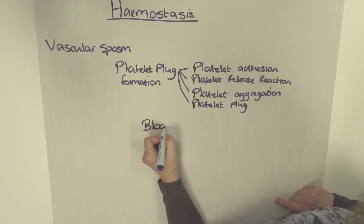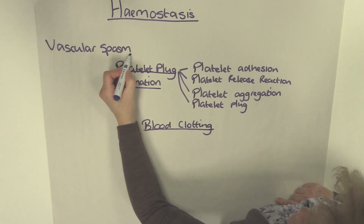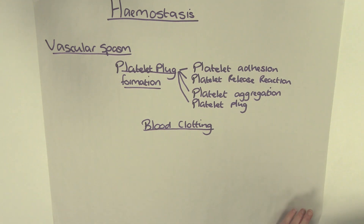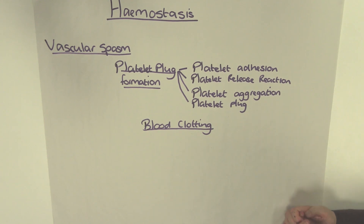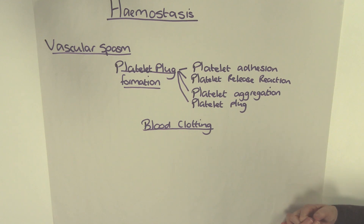Those are all the stages in platelet plug formation. The next stage in haemostasis is blood clotting. Blood clotting occurs once blood leaves the blood vessels — it will thicken and form a gel. Eventually the gel separates from the liquid serum, which is plasma without the clotting proteins. The gel is a clot which contains insoluble protein fibres known as fibrin, and trapped within these fibres are the formed elements of blood. Clotting requires several substances known as clotting factors, including calcium and inactivated enzymes identified by Roman numerals 1 to 13.